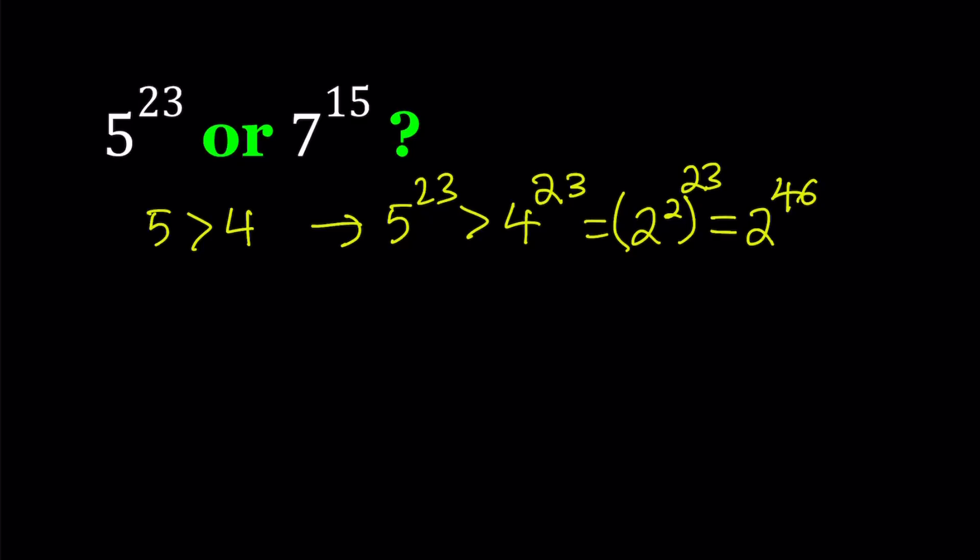From here we get that 5 to the power 23 is greater than 2 to the power 46. Let's go ahead and write that down as a result. 5 to the power 23 is greater than 2 to the power 46.